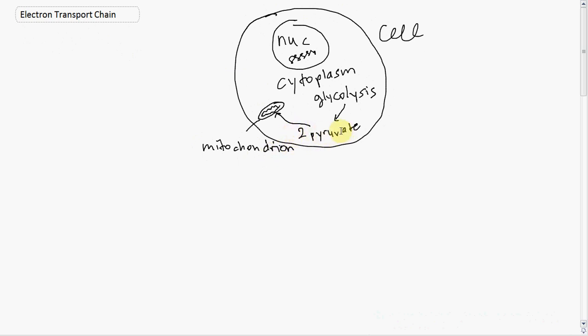In the mitochondria, the pyruvate is converted to acetyl-CoA and enters the citric acid cycle. The mitochondria is also where the electron transport chain takes place to make ATP.